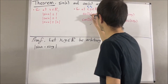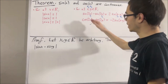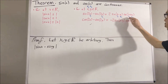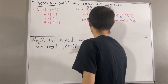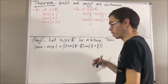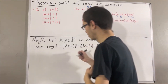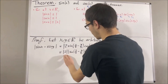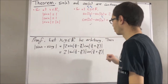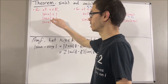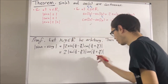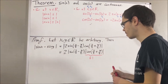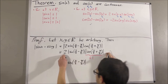Well, in that case, we get sine of x minus sine of y is equal to 2 times sine of (x over 2 minus y over 2) times cosine of (x over 2 plus y over 2). By the multiplication property of absolute values, we can split this up into a product of absolute values, and the absolute value of 2 is just 2. We know that the absolute value of the cosine of anything is less than or equal to 1, so in particular this quantity must be less than or equal to 1. And because of that, this entire expression must be less than or equal to 2 times the absolute value of sine of (x over 2 minus y over 2).